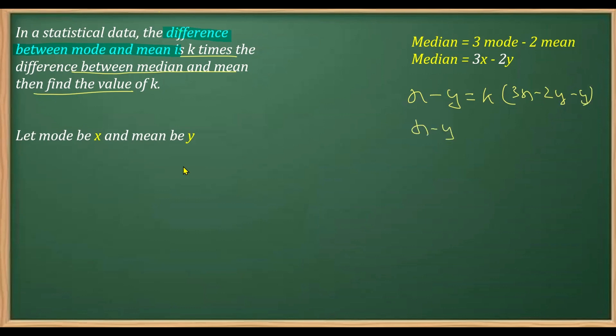So now this is x minus y is equal to k times, this is how much? 3x minus 2y minus y is minus 3y. So this is x minus y is equal to k times, I can take three common from here, three times k times x minus y.